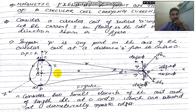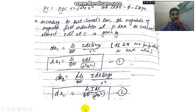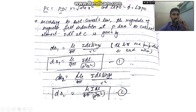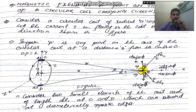We consider two small elements dl of the coil, each of length dl, at points C and D. We need to find the magnetic flux density due to the current carrying conductor. The distances PC and PD are both equal to R, where R equals the square root of a² plus X². The angle CPO, the angle made between PC and the axis, is denoted phi.